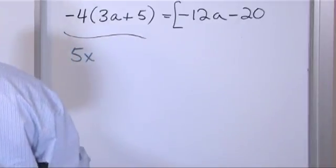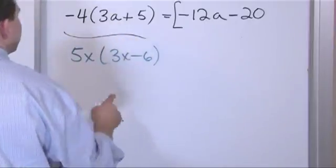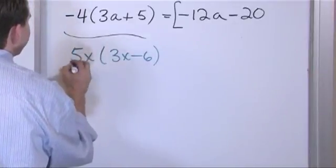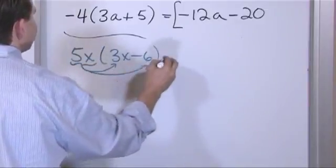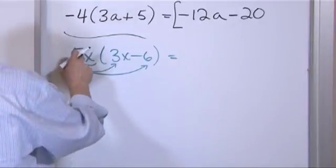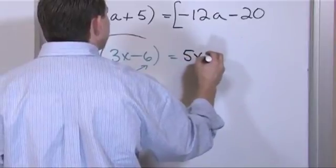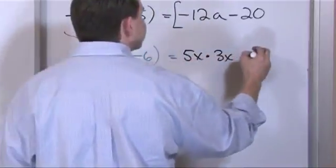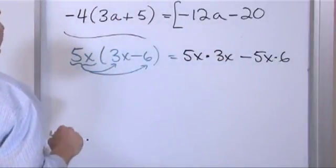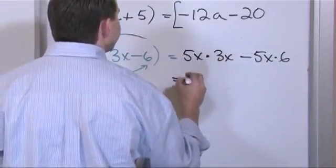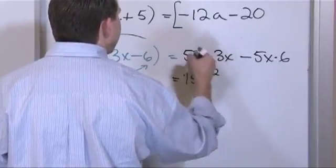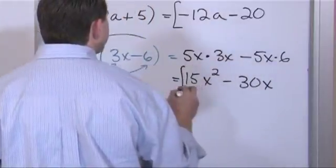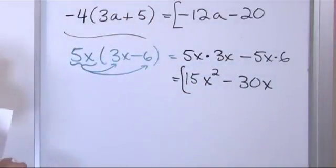Now what if you have 5x on the outside of (3x minus 6)? The whole term 5x gets distributed in term by term. Five x times 3x: five times three is fifteen, and x times x gives x squared because we add the exponents. Then minus five x times six is thirty, and x just comes down. The answer is 15x squared minus 30x.